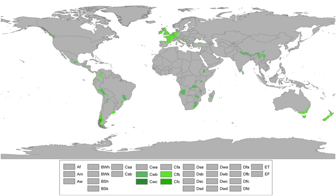Temperate oceanic climates, also known as marine mild winter climates or simply oceanic climates, are found either at middle latitudes or in tropical areas at higher altitudes. They are often found on or near the west coast of continents, hence another name for CFB — marine west coast — climates.